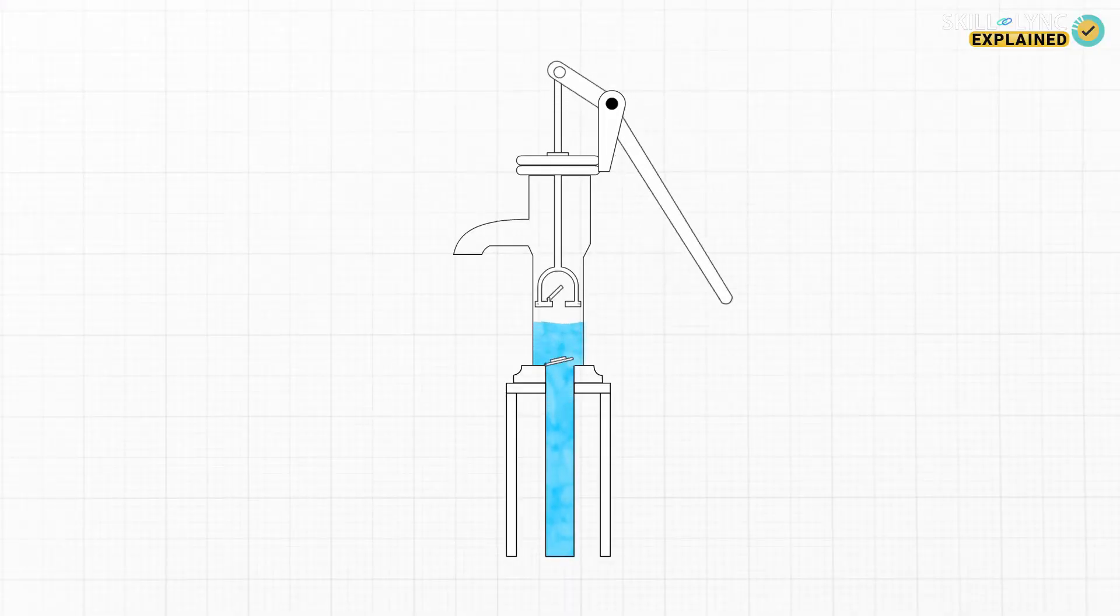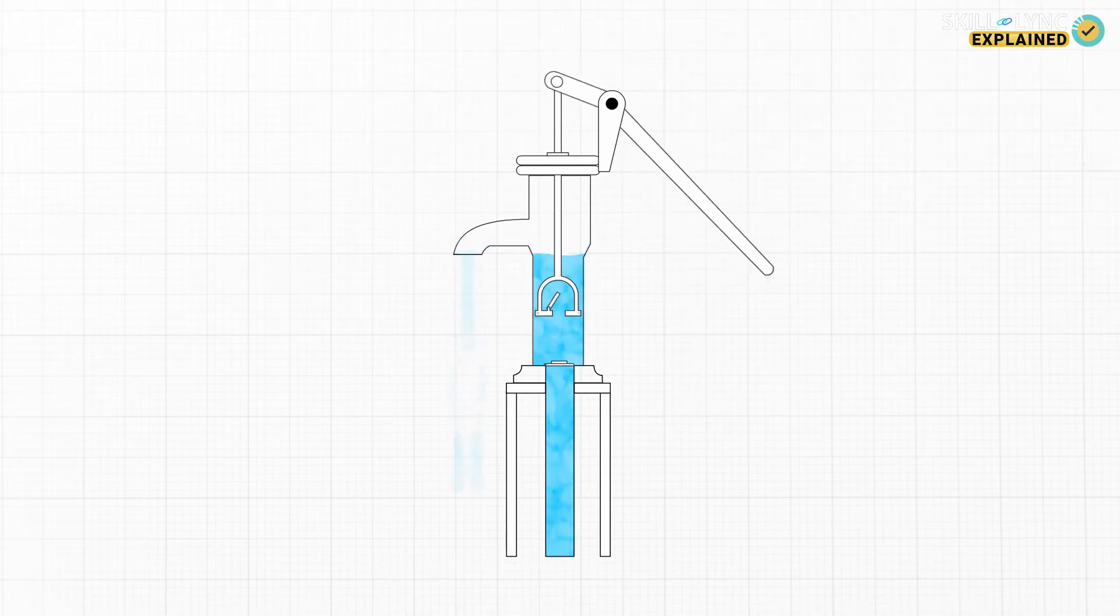A hand pump is also called a reciprocating pump. It has a piston that moves up and down to draw the water up from the ground and deliver it through the spout.